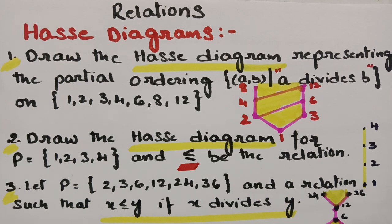So today's topic is on Hasse Diagrams. This topic is related to relations and is related to MFCS, DMS and DMGD. Now, we are going to draw some diagrams using the following data.